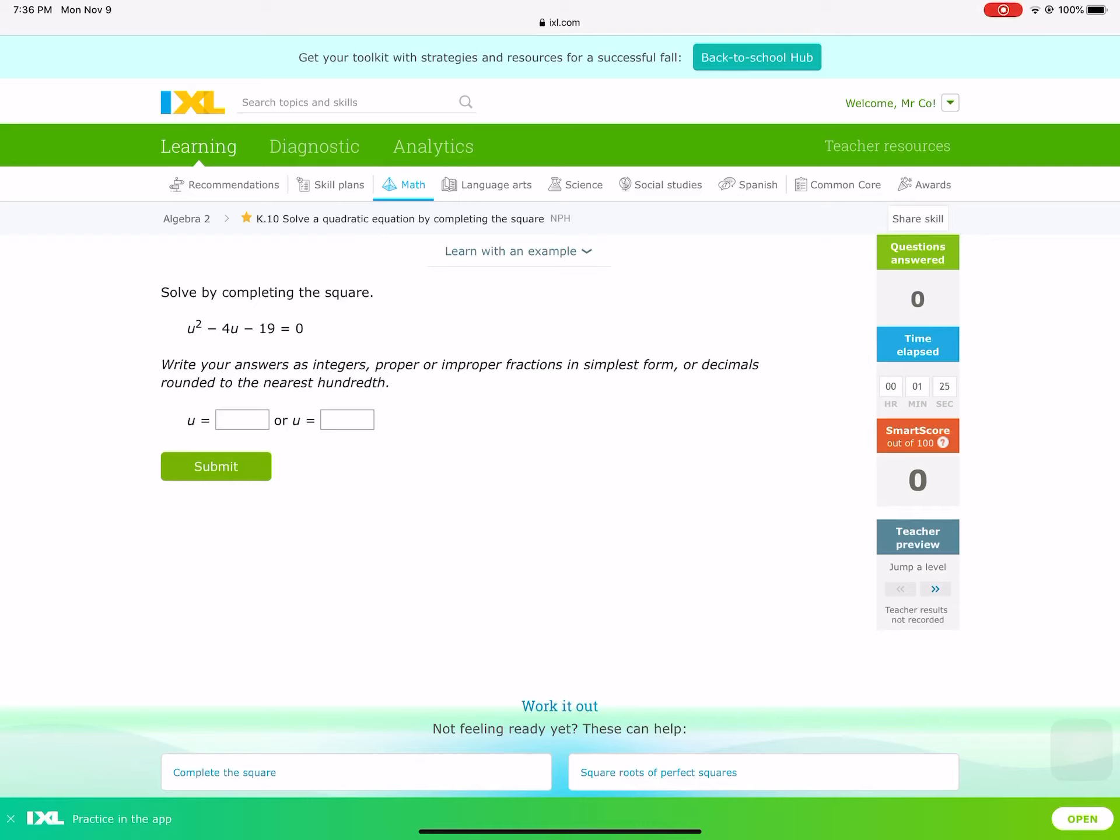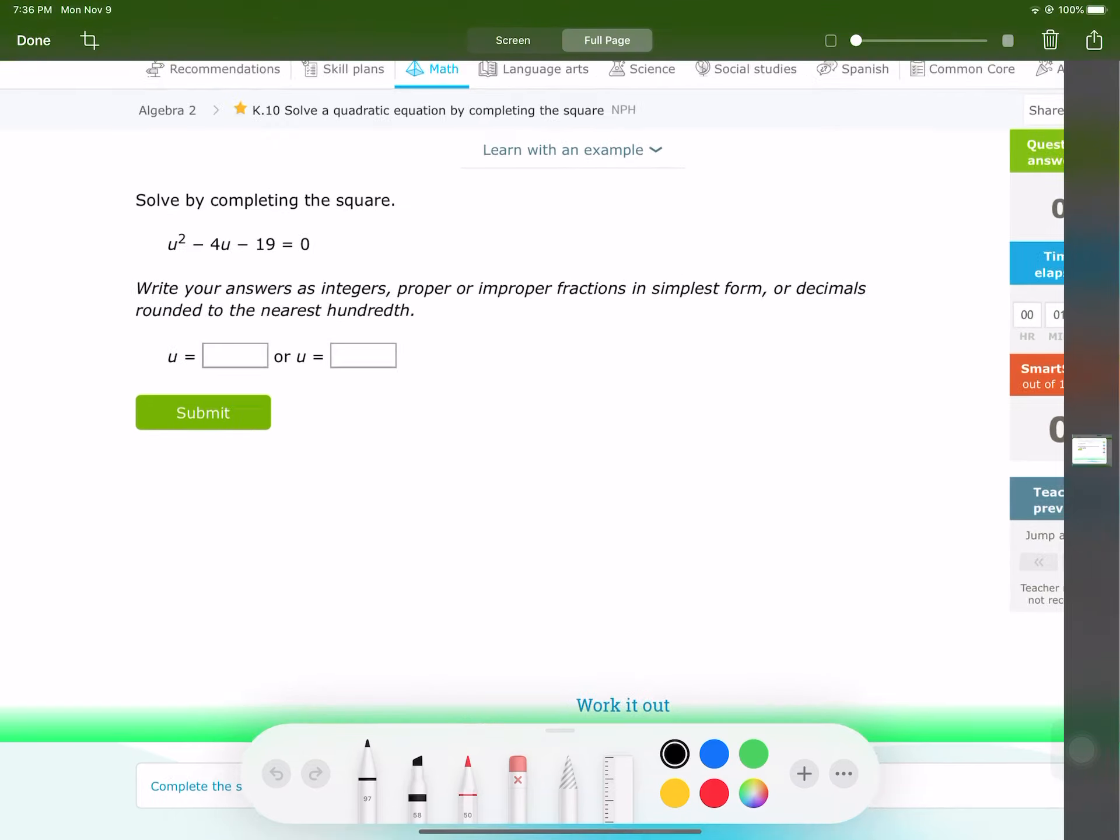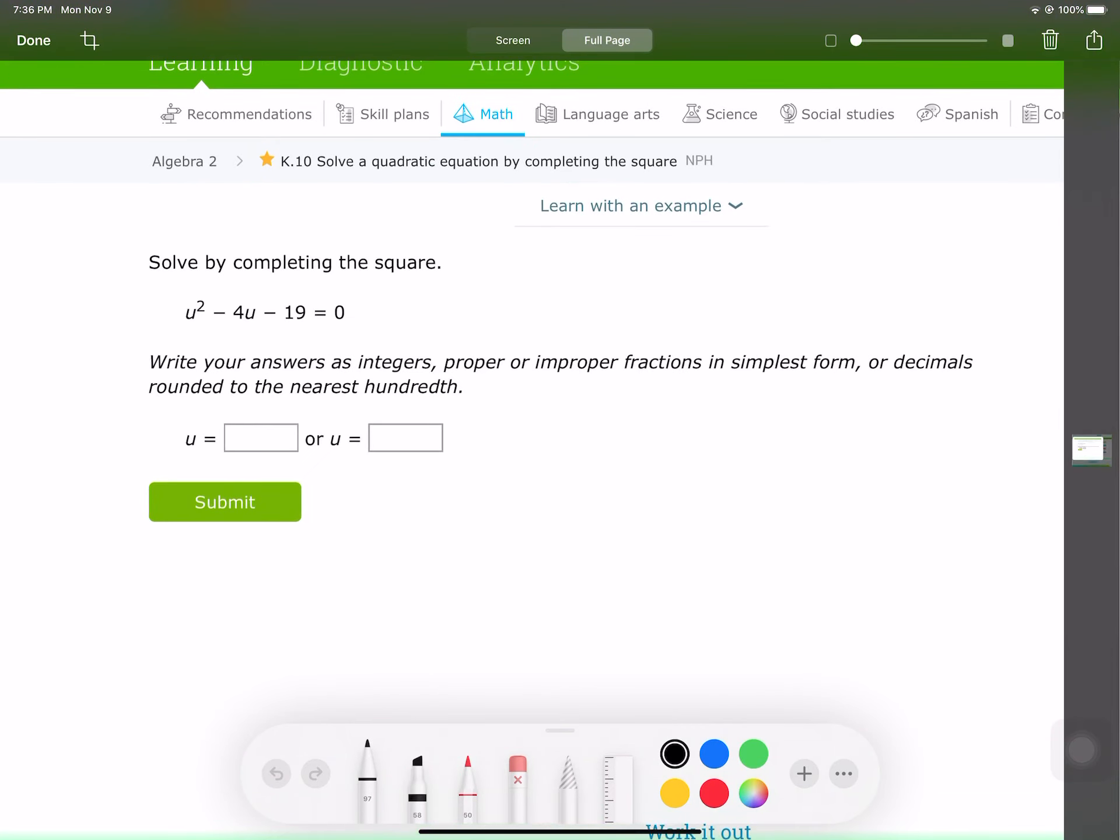Hi everyone, I was asked to do some new problems from K.10. So we're asked to complete the square. To complete the square, we're going to use our method. We could try factoring, but that's not what they want. So here we go.